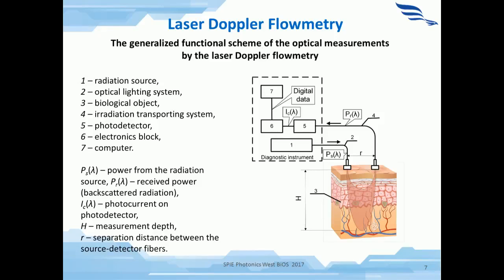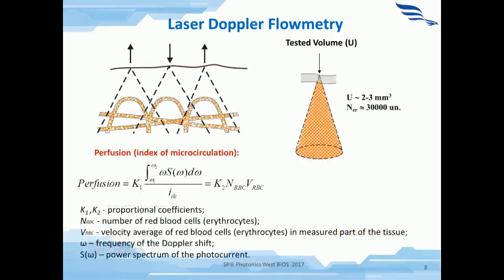However, methods implementing Doppler spectroscopy using a fiber-optic probe are often very informative and allow for analysis of a large set of different parameters. This slide shows a typical block diagram of an LDF device. LDF is based on the detection of the Doppler shift of laser radiation produced by reflection from moving red blood cells in the microvasculature. The result of LDF measurements is represented as an index of microcirculation or perfusion, and this variable signal contains information about the modulations of blood flow.